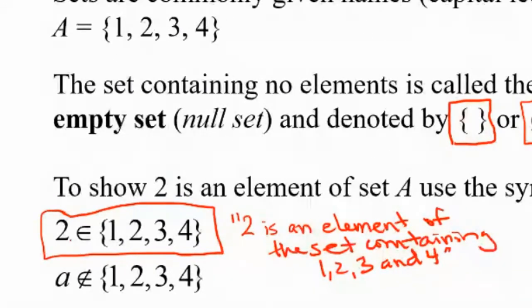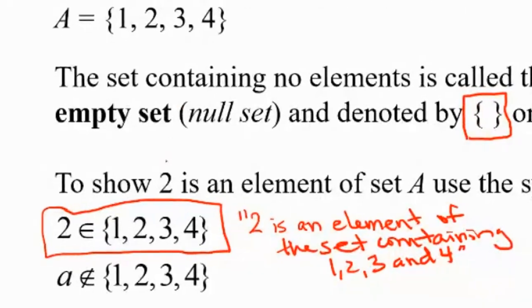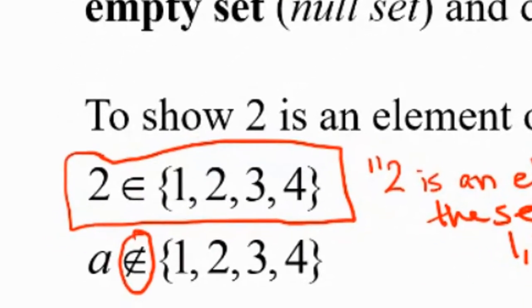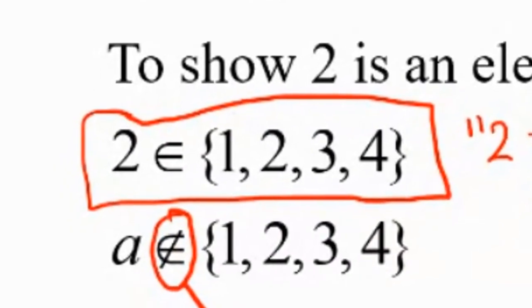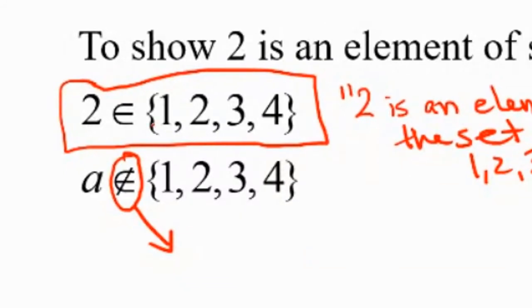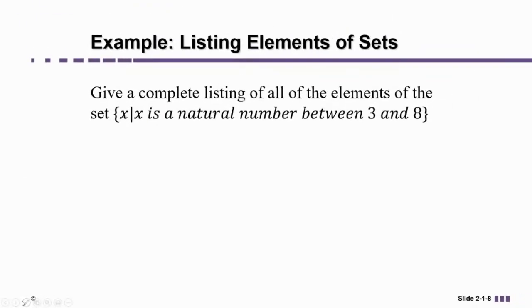Okay, but it's so much faster to write 2, the elongated E and then the set {1, 2, 3, 4}, than write out the whole sentence. And what do you think this symbol here means that has the elongated E with a line through it? Very good. It means not an element of. So a is not in the set.